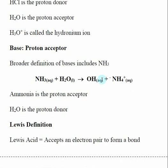The big difference in the Bronsted-Lowry theory comes when we look at a base. A base is defined as a proton acceptor — where in the Arrhenius theory it was something that produced OH-. This gives us a broader definition. When we look at ammonia, it does not have a hydroxide ion to give up, but it can react with water. Since water is made up of H+ and OH-, ammonia acts as a proton acceptor — the water gives up a proton — and this produces OH- and ammonium. So ammonia is the proton acceptor and water is the proton donor.